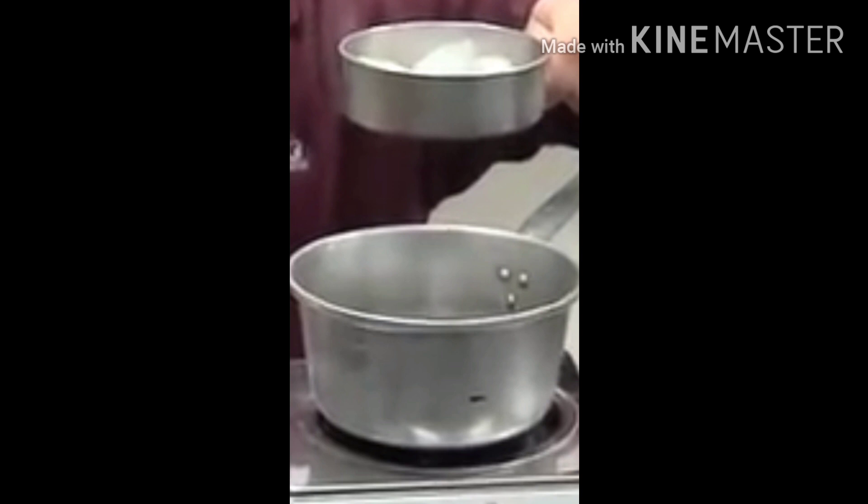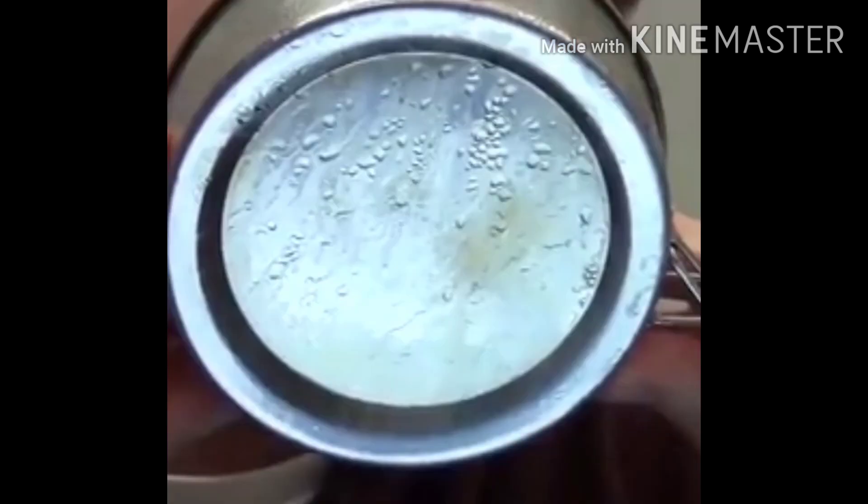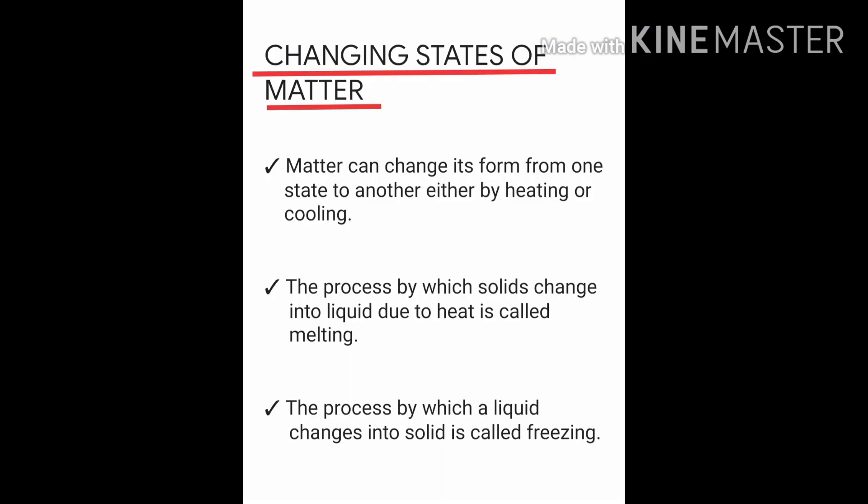Now when we take this steam and it touches the cool surface of the lid — we have kept some ice cubes on the lid — it changes into water. So this process by which water vapor or gas changes into water is called condensation.